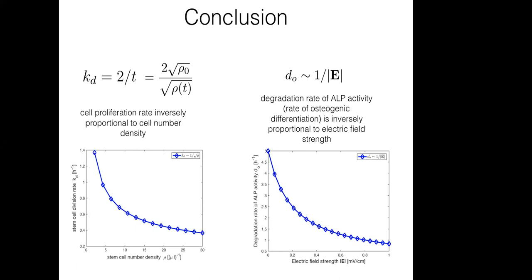For the function k_D = 2/t, one can show this can be rewritten as proportional to 1/√ρ, meaning the cell division rate decreases as cell density goes up. This signifies that cells have a signaling mechanism that senses cell density and regulates division. The second conclusion is that the ALP degradation rate inside the cell is inversely proportional to the external field strength. These are the two main conclusions from the first part of the talk.